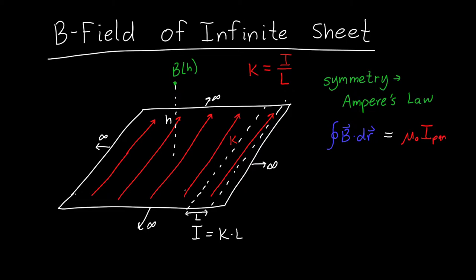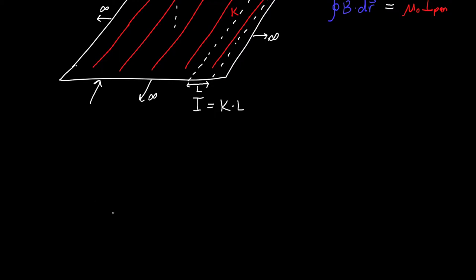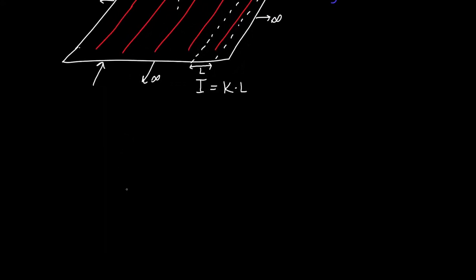But it's not entirely obvious what kind of symmetry we can use. When we had lines or cylinders, we could use a circular loop, but what are we supposed to do with an infinite plane? To figure that out, let's zoom in on the plane and look at it from the side, as if it's flat. The current is flowing away from us, drawn with X's going into the board. The magnetic field from each current segment is going to be in a little loop around each segment. The magnetic field due to the center current is going to curve above and below it.